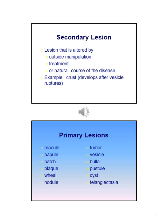A secondary lesion is a lesion that has been altered by things such as outside manipulation, treatment, or the natural course of the disease. Examples of primary lesions include macule, papule, patch, plaque, wheal, nodule, tumor, vesicle, bulla, pustule, cyst, and telangiectasia.